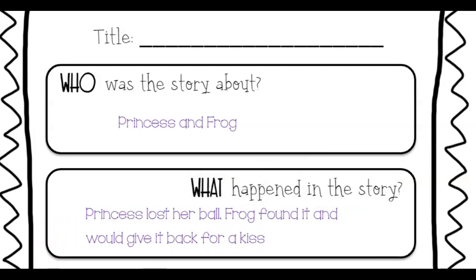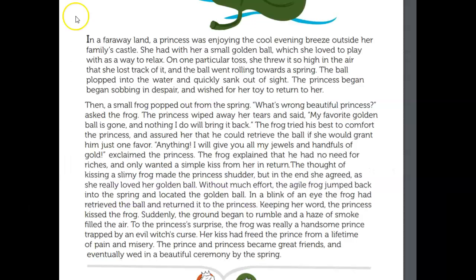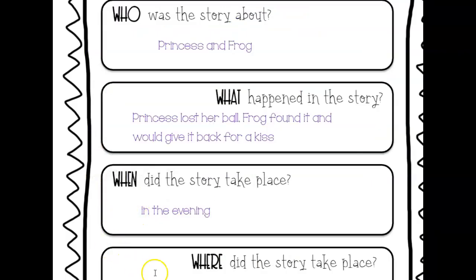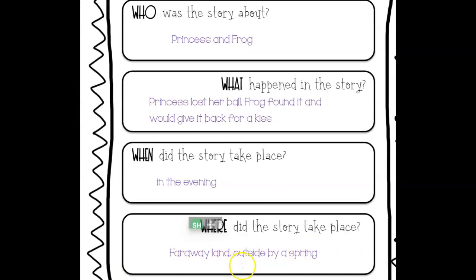For our next one: when did the story take place? Let's look back at the story. In a faraway land, a princess was enjoying the cool evening breeze outside her family's castle. So it was in the evening. It doesn't tell us a time period — there are still princes and princesses today, so it could happen today. We just know that it was in the evening. Write down 'in the evening.' The next W is 'where' — where did the story take place? It was in a faraway land, outside, by a spring.